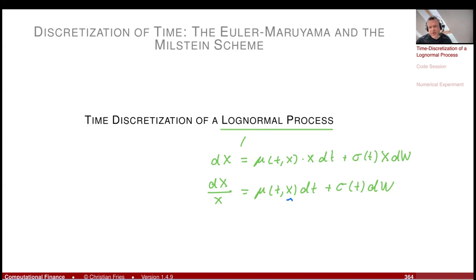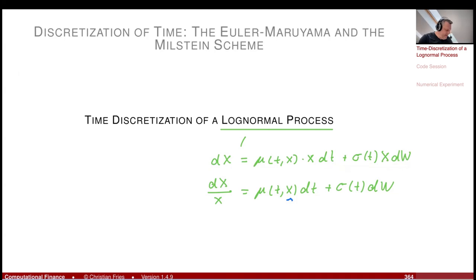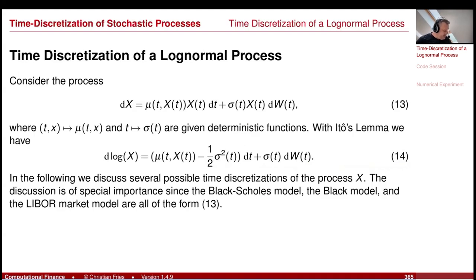The Black-Scholes model is of course of this form with a constant sigma. In my coding example, I will consider the case where mu is zero, so I will only consider the case where sigma depends on X and we have sigma(t, X) dw in the dX. So consider the stochastic process: dX = mu*X dt + sigma*X dw.